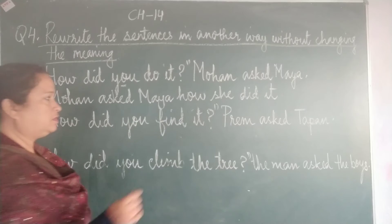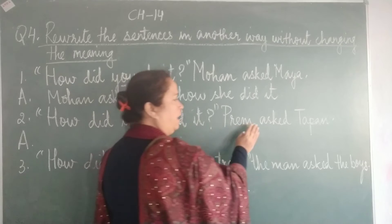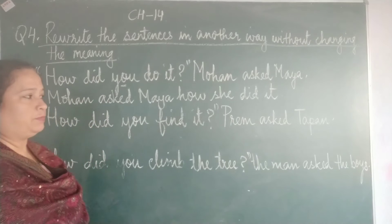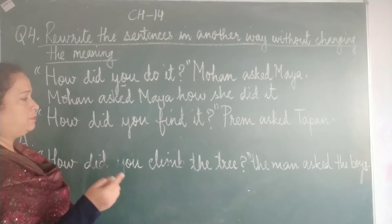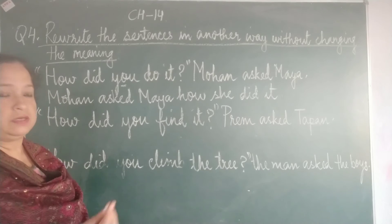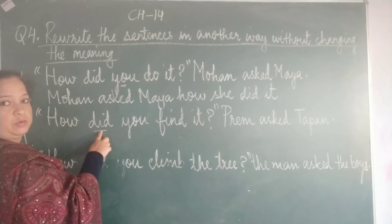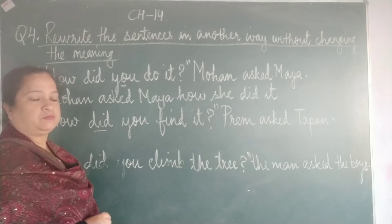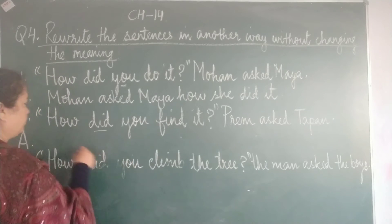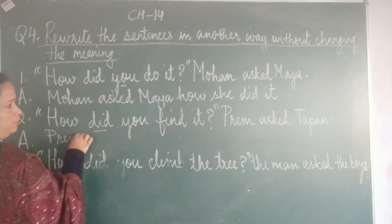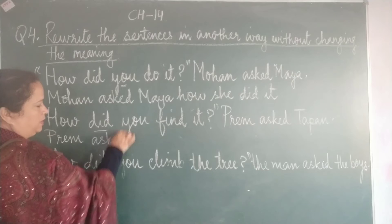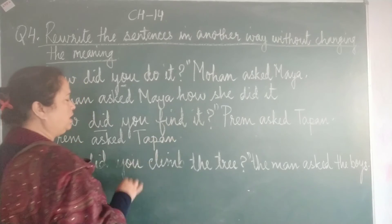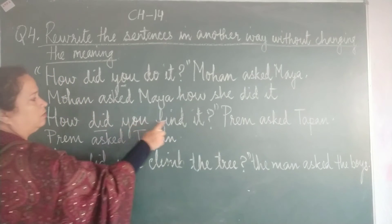'How did you find it?' Who is saying the sentence? Rain is saying this sentence. And who is he saying the sentence to? He is asking this question to Tappan. So what is he asking Tappan? He wants to know how Tappan found it. Now why did we change the verb? Because we change from the direct to the indirect speech, we always end up changing the helping verb or the main verb. So let us begin our answer using: Rain asked Tappan. What did he ask Tappan? He asked Tappan how he found it.